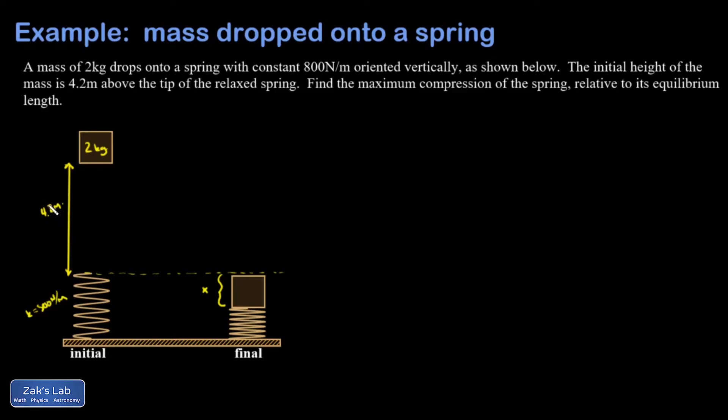And then say all of that energy gets turned into the compression of the spring, 1/2 kx squared. What you're ignoring if you do that is that the block goes farther than 4.2 meters downward. It goes 4.2 meters plus an additional x, and that x is unknown, so that's what complicates the problem mathematically.